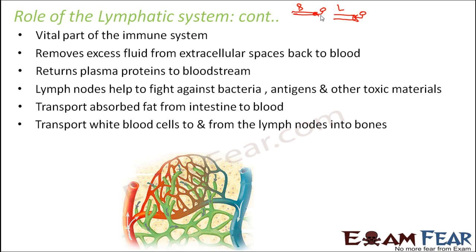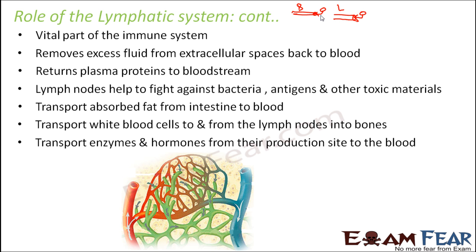The lymphatic system also transports white blood cells to and from the lymph nodes into the bones, since lymph nodes are places where many white blood cells reside. It also transports enzymes and hormones from their production sites to the blood, carrying them from different tissues toward the heart and into the bloodstream.